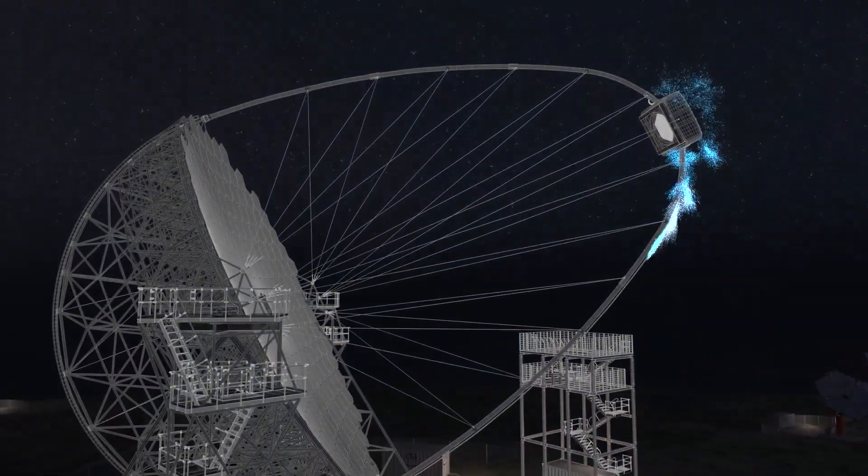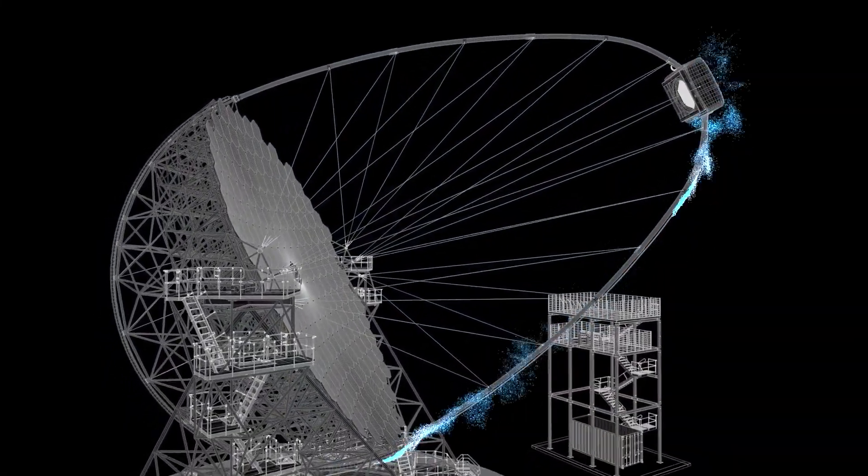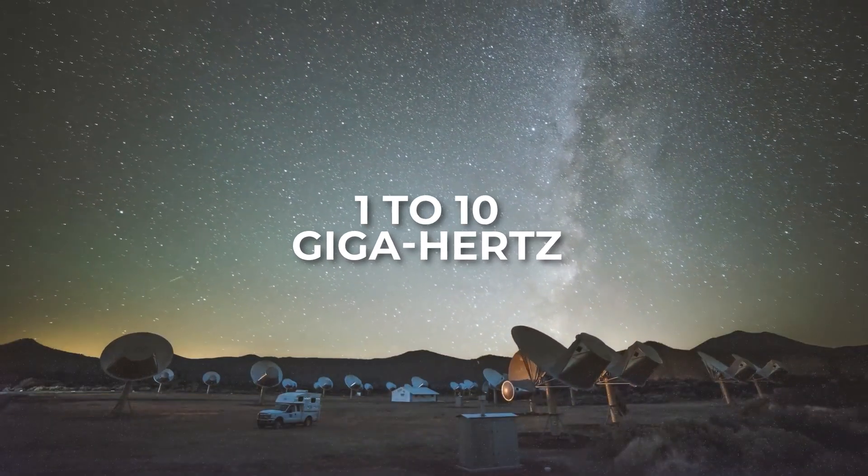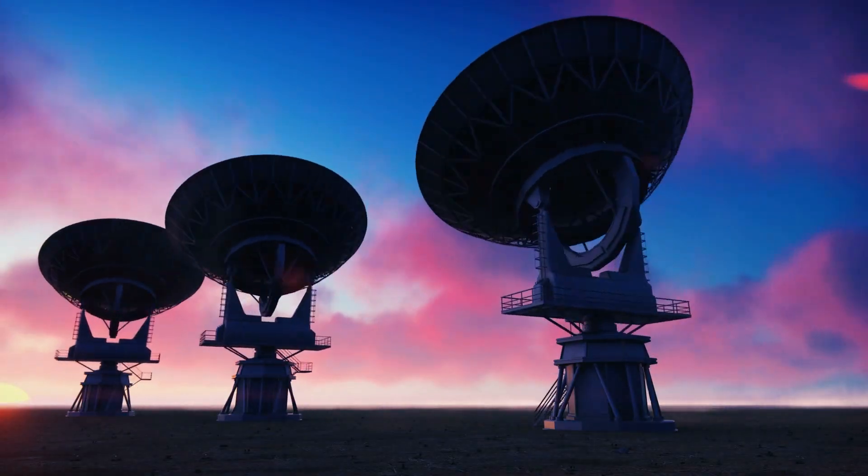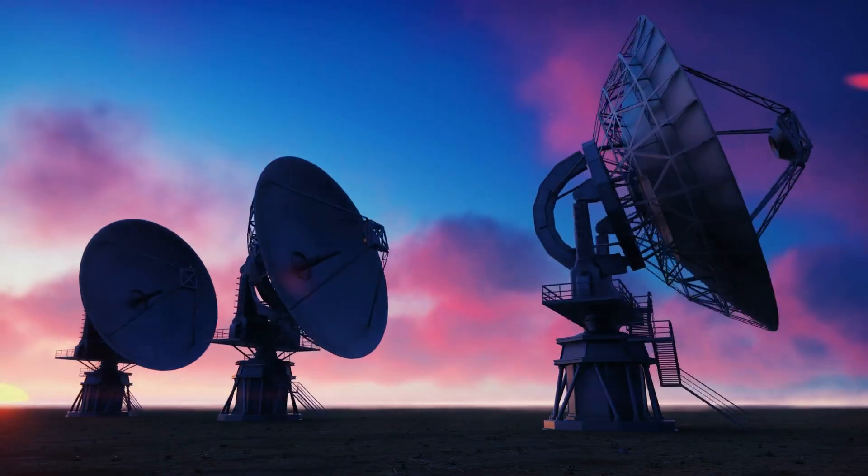Each antenna has a cooled log periodic feed that works well from 1 to 10 gigahertz. The Telescope Array can produce up to 32 phased array beams, making it suitable for large surveys.